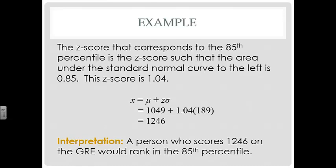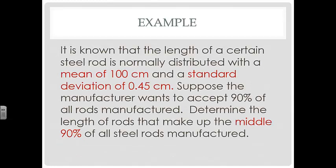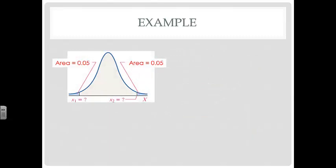Another example: the length of a steel rod is normally distributed with mean 100 cm and standard deviation 0.45 cm. The manufacturer wants to accept 90% of all rods — specifically the middle 90%. The combined rejection area is 0.10, so each tail has an area of 0.05, meaning each side's cutoff corresponds to a 0.05 area in the tail.